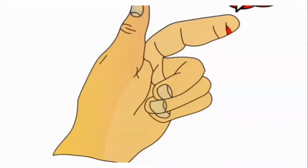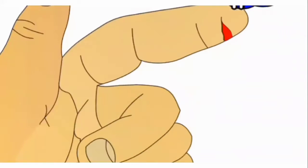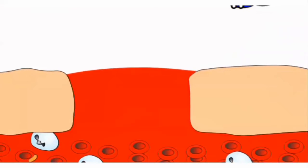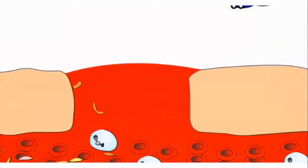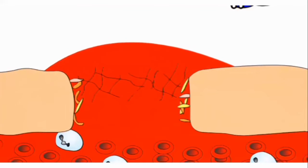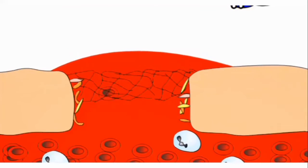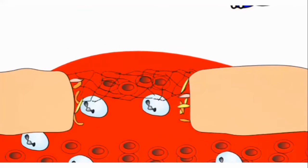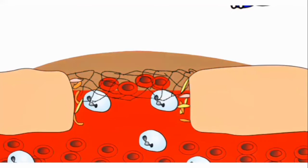In this test, a cut is made on the superficial surface of the skin, and the time is noted from the start of the bleeding until the bleeding stops. This test is basically used to detect the function of the platelets, as platelets are involved in the clotting of the blood so that bleeding is stopped by the formation of a clot.